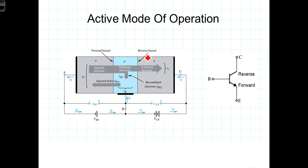In this video we'll derive expressions for the terminal currents of the BJT in the active region. In the diagram, the terminal currents I_B, I_C, and I_E are defined. These reference directions reflect the direction of conventional current, not the electron current, and as you notice, these directions are the opposite directions of the electron flow. So we're going to be careful and precise in our terminology.